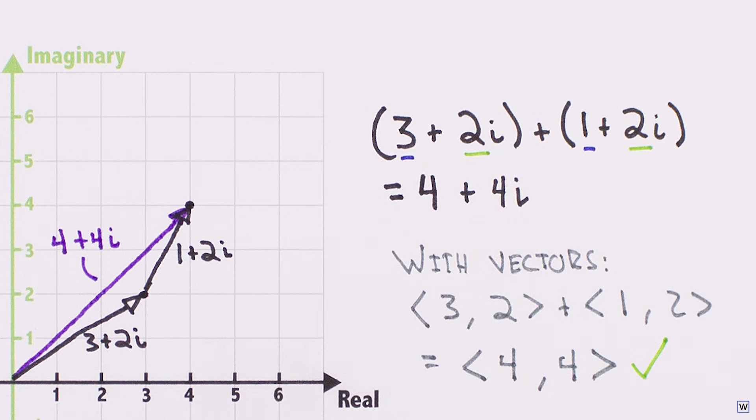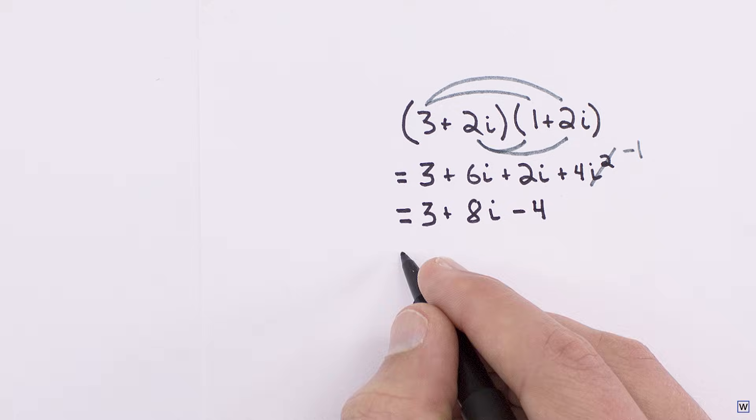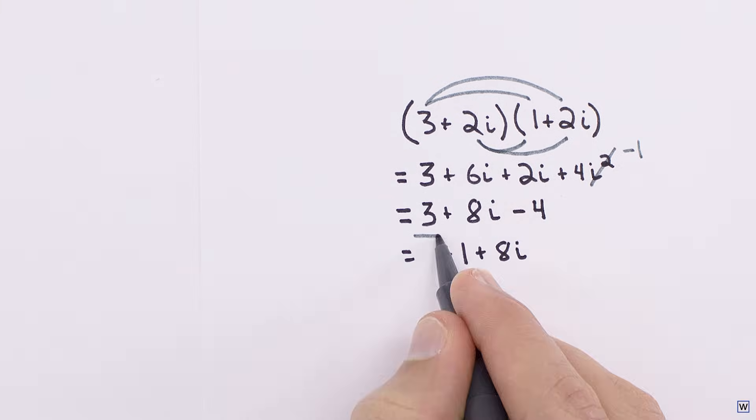Where complex numbers get really interesting is through multiplication. We can multiply complex numbers together by foiling, just as we do with binomials in algebra, with the minor complication that we know i squared can be replaced with minus one. This is a perfectly valid algebraic solution to our problem, but is only half the picture.